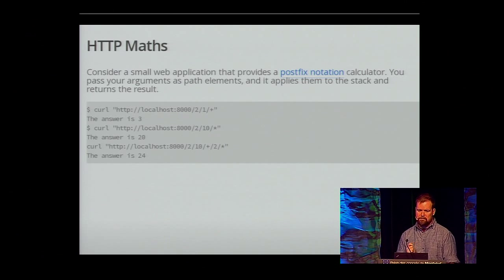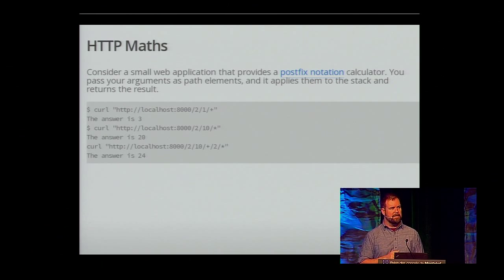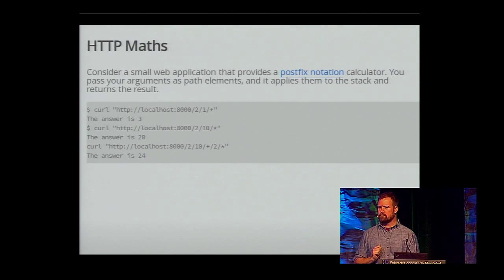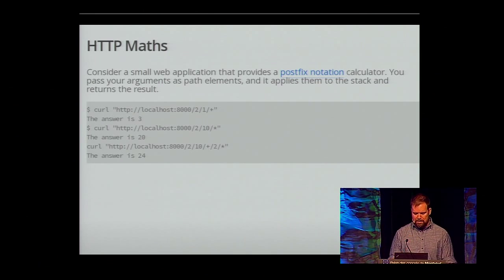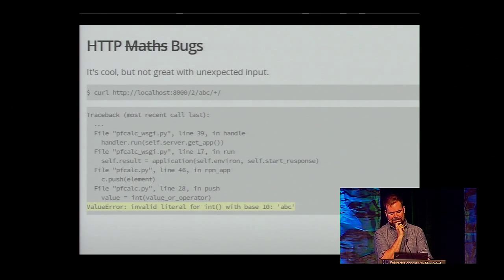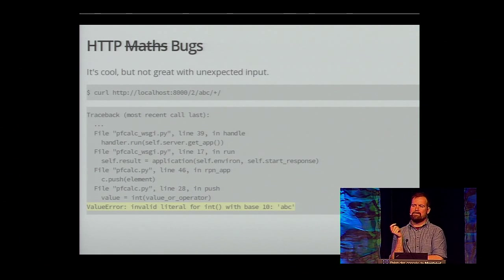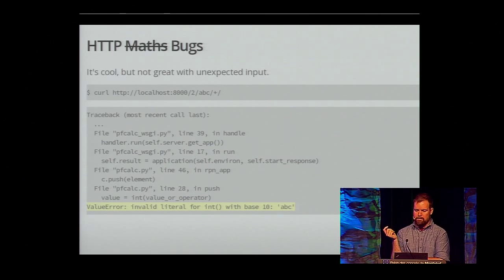You can do things like 2, 1 plus and get back 3. You can do 2, 10 star and get 20. 2, 10 plus 2 star is naturally 24. Unfortunately, it's not great with unexpected input. If I have something that's not an integer, it blows up with a value error.